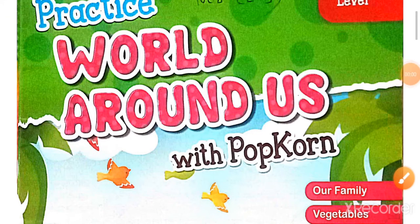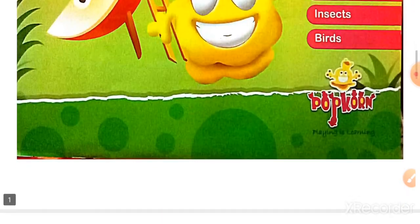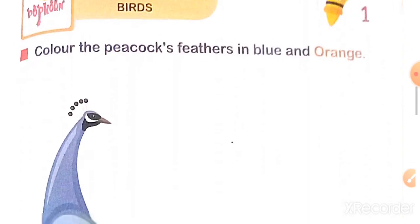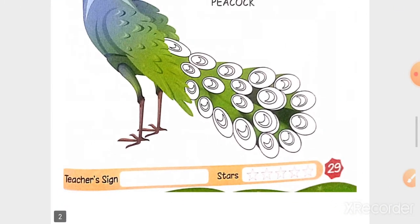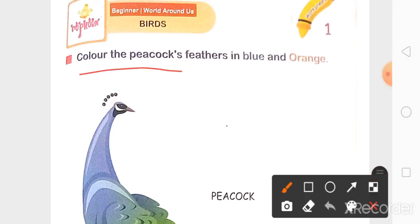Students, let's open your Practice World Around Us book. Page number, yes, 29. Color the peacock's feathers in blue and orange.